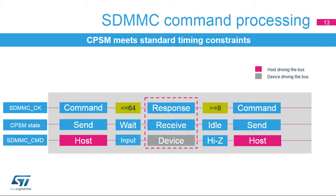Once a start bit is driven by a device, it is detected on the command line and the CPSM moves to receive state. When the response is fully received, the received CRC code and the internally generated checksum code are compared and the appropriate status flags are set in the SDMMC interface status register. Then the CPSM enters the idle state. Note that the CRC fail flag will only be set for responses with a CRC and when the CRC check failed. After a complete command with a response is received, the CPSM remains in idle state for at least 8 SDMMC-CK clock periods to meet command-to-command timing (NCC) and response-to-command timing (NRC) constraints.